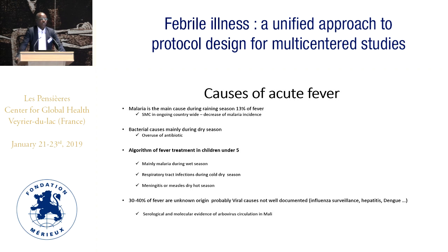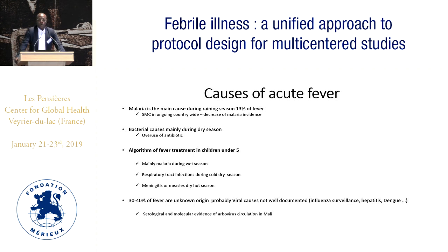There is an algorithm for fever treatment in children under five. They treat mainly malaria during the wet season, respiratory tract infections during the cold dry season, and meningitis during the dry hot season. There is also 30 to 40% fever of unknown origin, probably due to viral causes, and there is surveillance of influenza, hepatitis, and dengue.